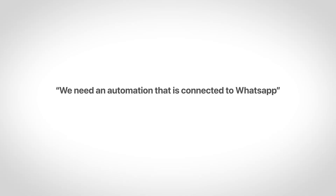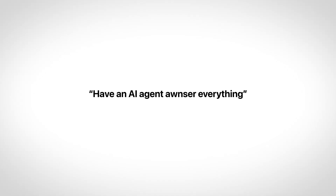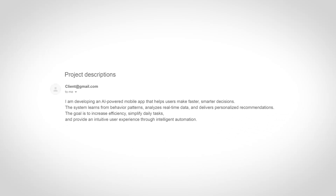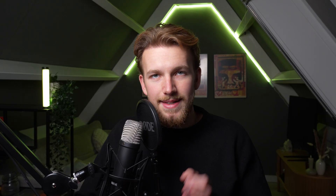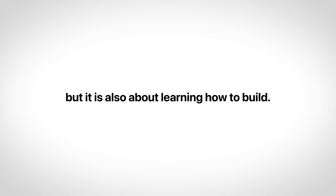For example, they say: 'We need an automation that is connected to WhatsApp, classifies all the messages coming in, and then has an AI agent answer everything.' So when you're using N8N to solve this problem, you actually become a translator between normal English and N8N nodes. And this exact approach is what I stepped away from. But this is not the main reason, because it gets worse.